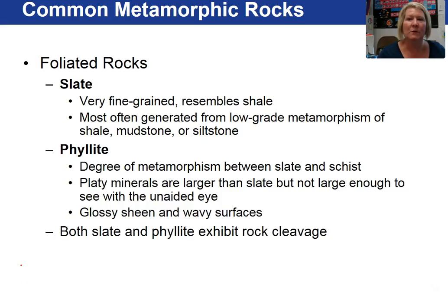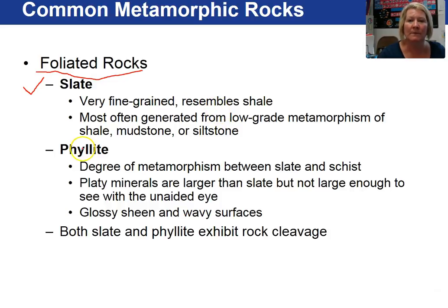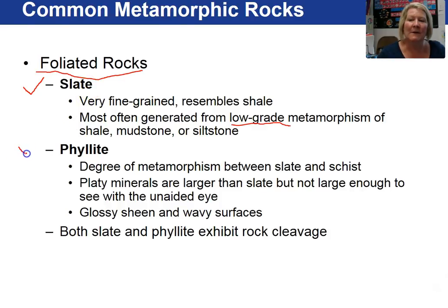Let's give names to our foliated rocks. Slate: very fine-grained mica, resembles a shale. The parent is a shale, mudstone, or siltstone — low-grade metamorphism. The degree of metamorphism between a slate and a schist is called a phyllite.